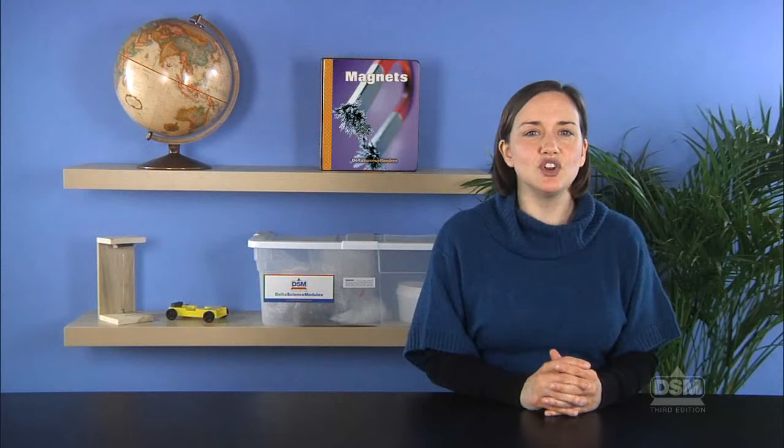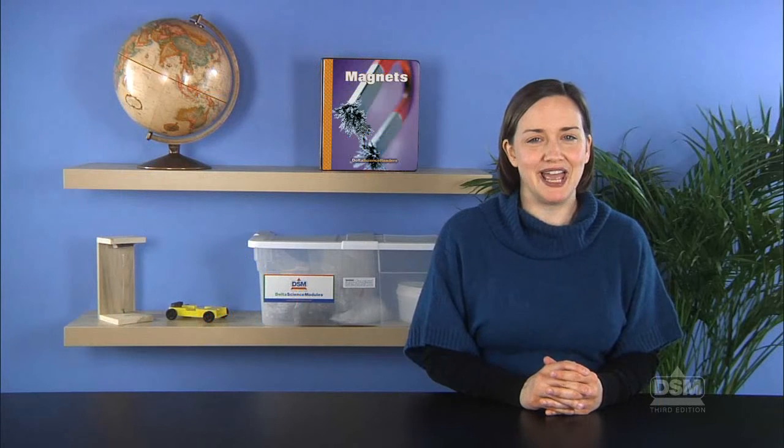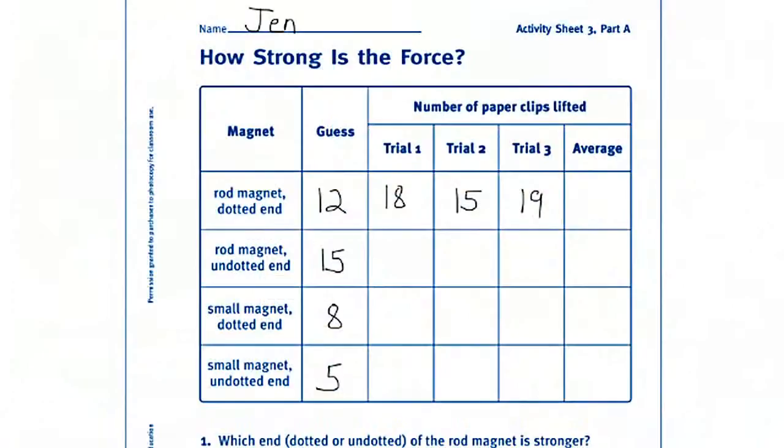Check to make sure that students are not linking the paperclips, but rather allowing magnetism to hold the clips end to end. Help the students to average their results by adding the number of paperclips picked up in each trial and dividing by the number of trials.